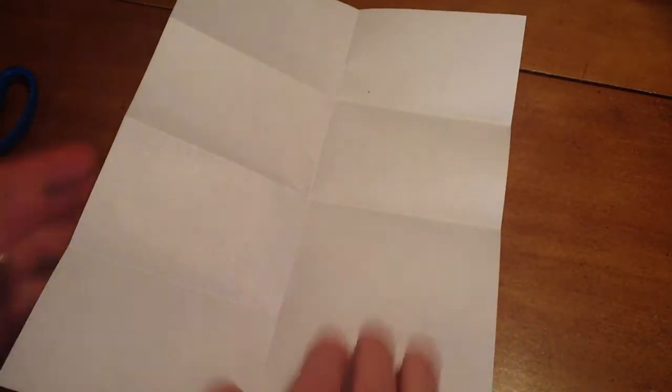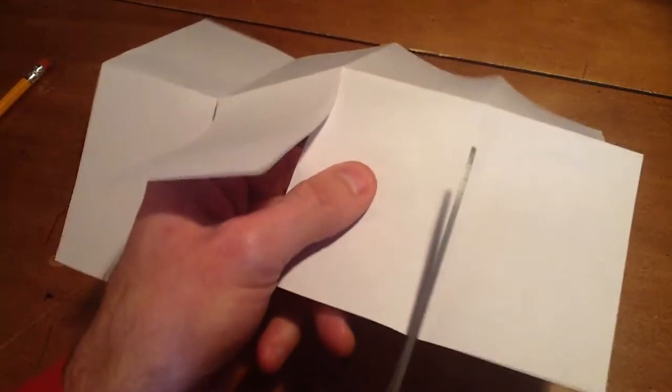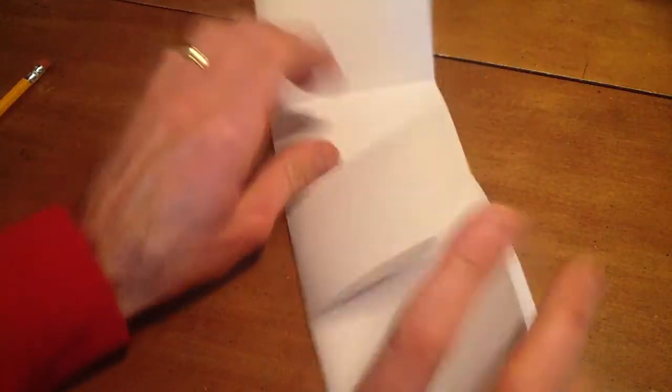What you're going to do is start from the right hand side. After you fold it over, start from the right hand side and cut into the middle. Don't cut all the way through, just cut to the middle. So what that does is it makes four flaps.